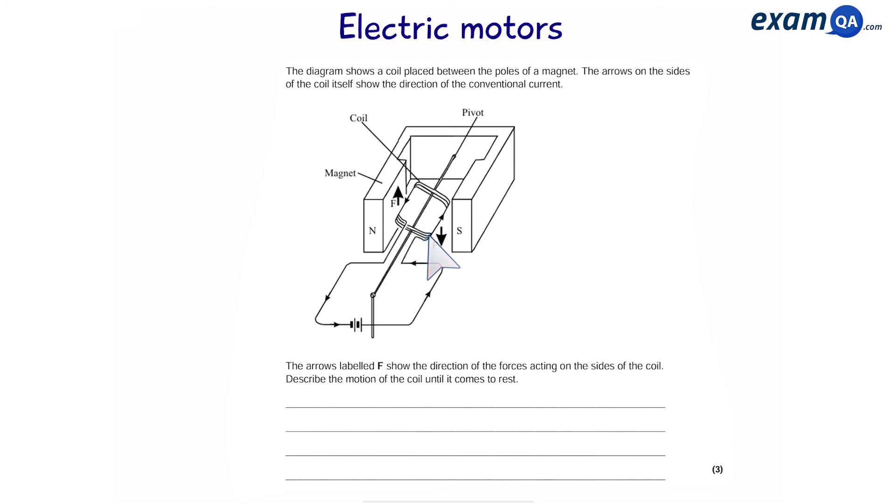Well, first of all, we can see that the coil is already moving somehow. So it's going to keep turning clockwise until it gets to the top. Then it's going to reverse in direction. And then turn backwards until it comes to rest. And the reason this happens is because we don't have a split ring commutator to swap the contacts and allow the coil to keep moving onwards.